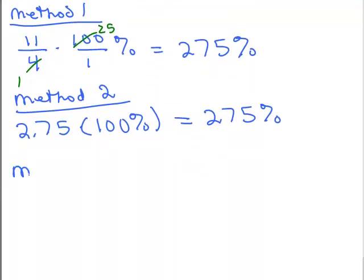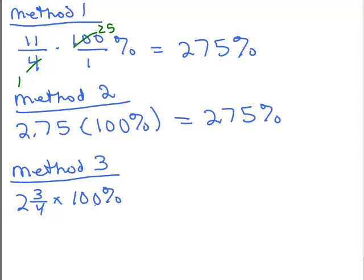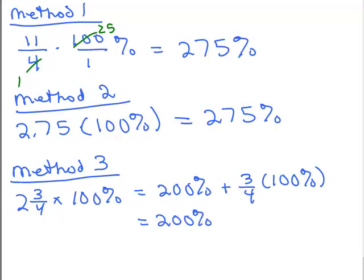And the third method, remember how we started out, 2 and 3 fourths times 100 percent. You know it's going to be 200 percent. That's 2 times 100, plus I could just take that 3 fourths and figure out how to write that as a percent, so 3 fourths of 100 percent. So this will give me 200 percent, plus, now what goes on over here, I can cancel. And that gives me 3 times 25, which is 75 percent. And if I put the two together, I get 275 percent again.